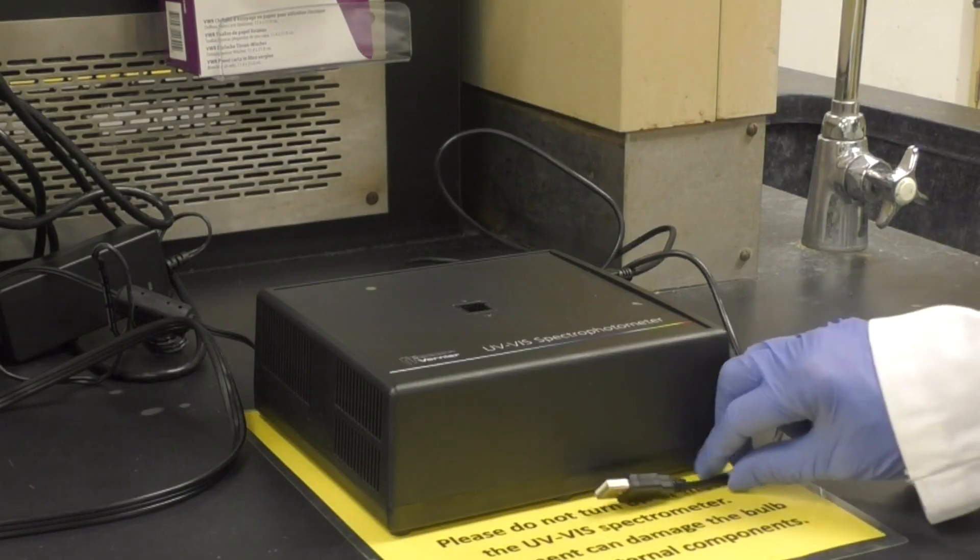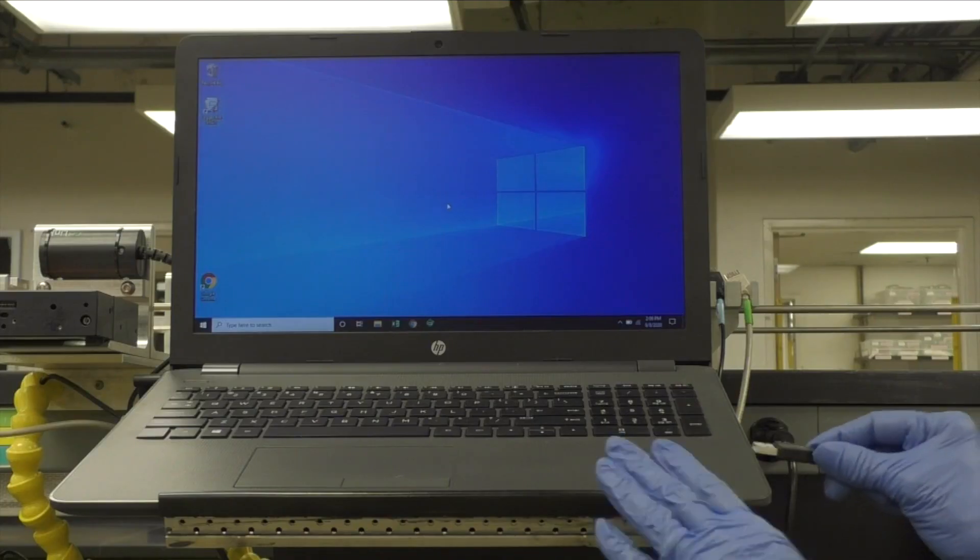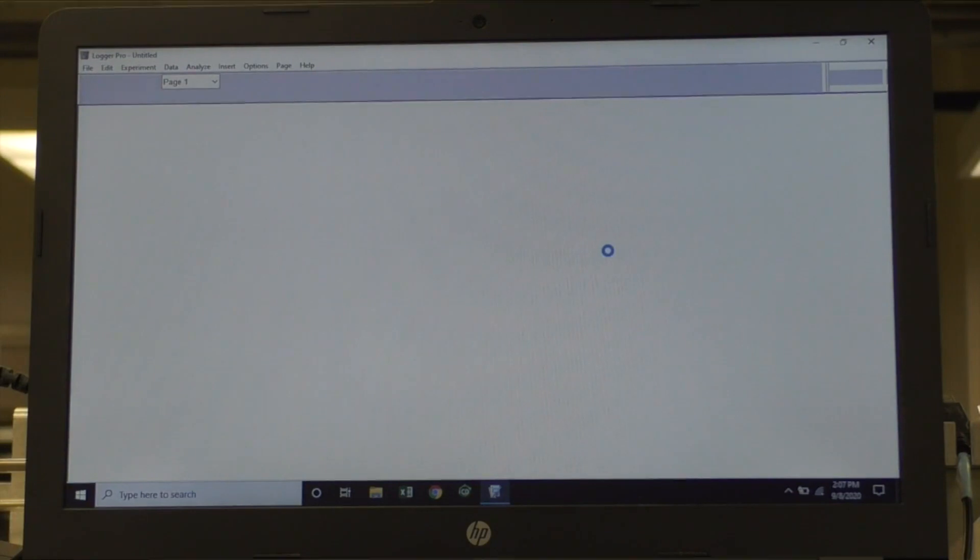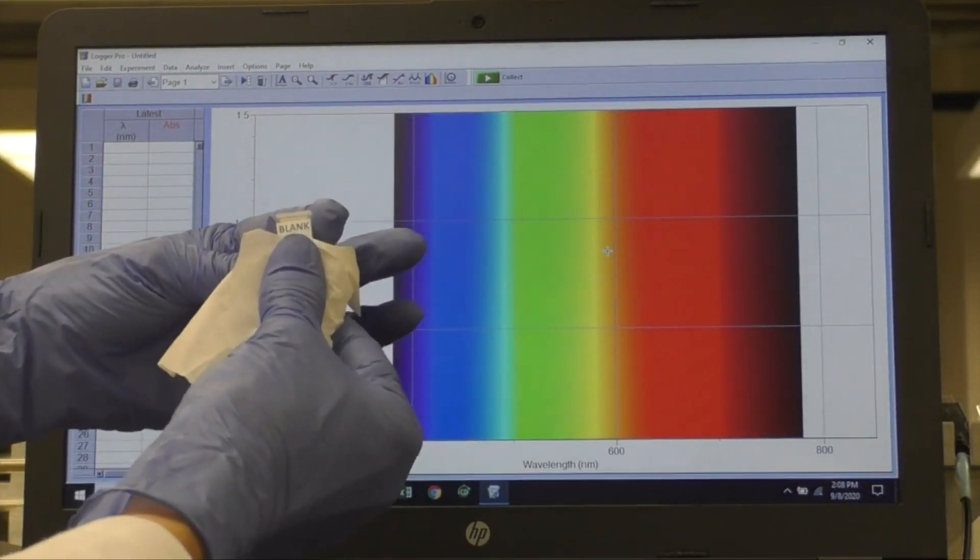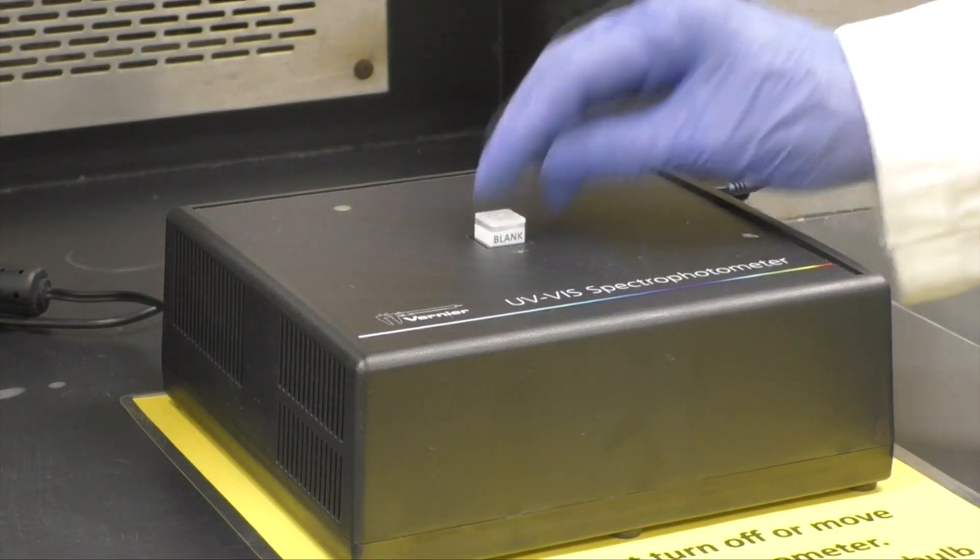Begin by plugging in the black USB cord connected to the spectrometer into your laptop and then opening Logger Pro. Use the prepared blank from your patient block. Wipe it with a Kimwipe and place it in the spectrometer being sure a clear side faces front.